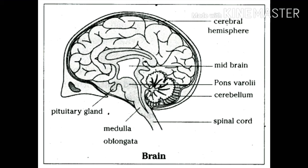The midbrain is a very small region situated just above the hindbrain, and it has no well-known specific function. The hindbrain consists of three parts: cerebellum, medulla, and pons. The cerebellum is present at the back of the skull and maintains body posture and balance. The medulla is the anterior part of the cerebellum and controls the rate of heartbeat, respiration rate, and blood pressure. The medulla continues downward and forms the spinal cord.